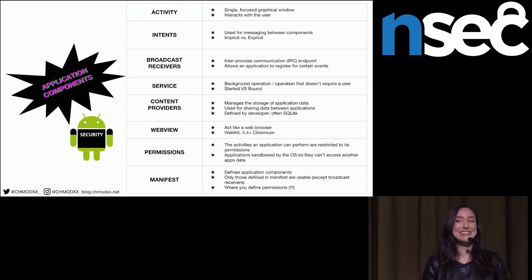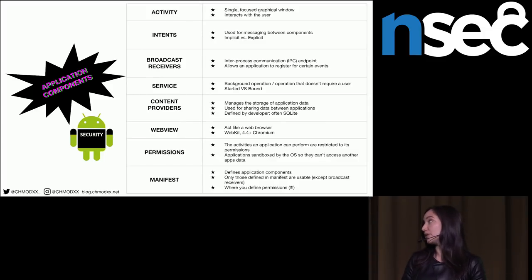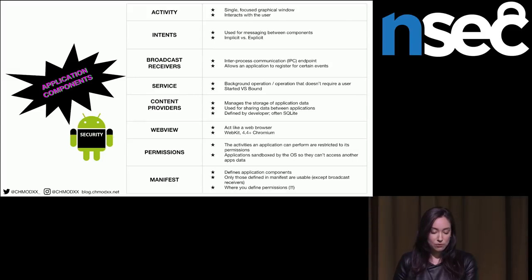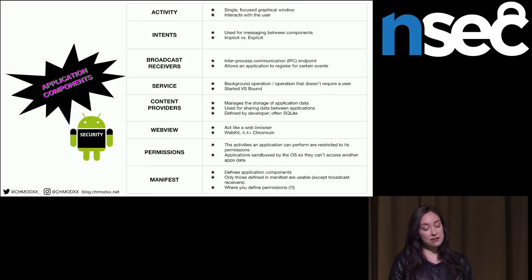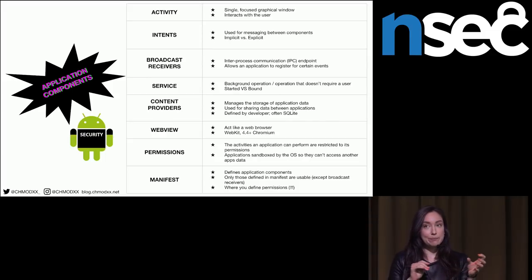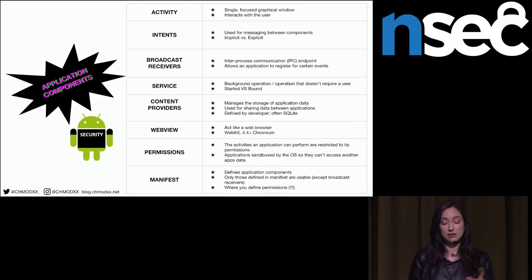Permissions are very important. The activities an application can perform are restricted to its permissions, and applications are sandboxed within the OS so they can't access other applications' data. If you have an application taking banking information, you don't want some malware to see those credentials. The manifest file is an XML document that tells you everything you need to know about the application. It's where you define your permissions and it's responsible for allowing you to use components while building your application. If you don't define something in the manifest, except for broadcast receivers created at runtime, they don't actually do anything.